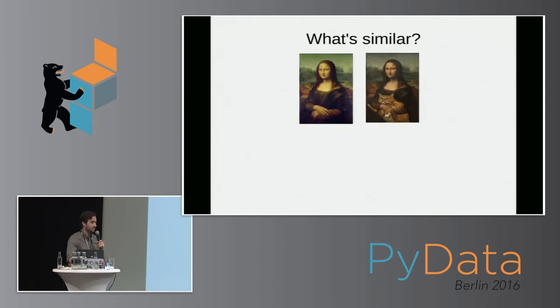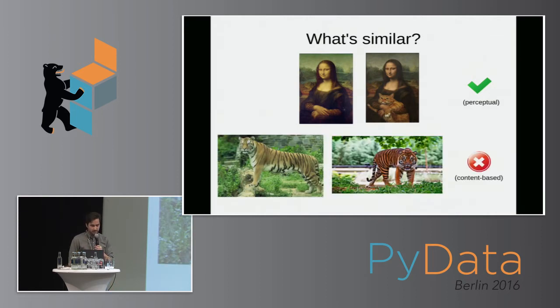To get on the same page, we should know what I mean when I say a similar image. These two images are similar, and we say they have perceptual similarity in the sense that if you were some kind of alien and didn't know what the Mona Lisa was or what a cat was, you could probably guess that these images are pretty similar. As opposed to content-based or conceptual similarity, even though they have the same color scheme, you really need to know what a tiger is to know that these are two pictures of a tiger in different positions. Our image library is just focusing on perceptual similarity and ignoring this content-based similarity.